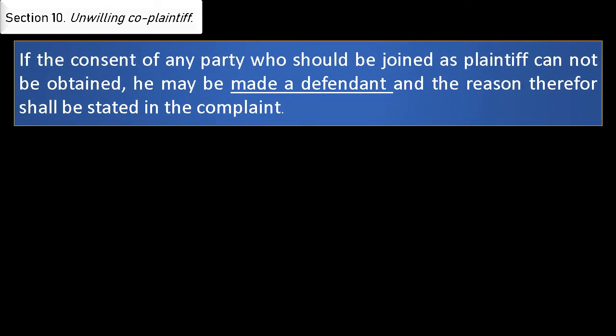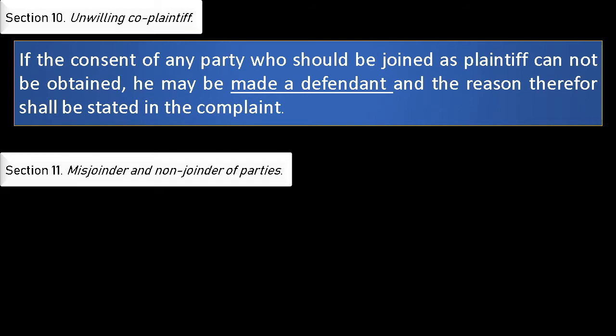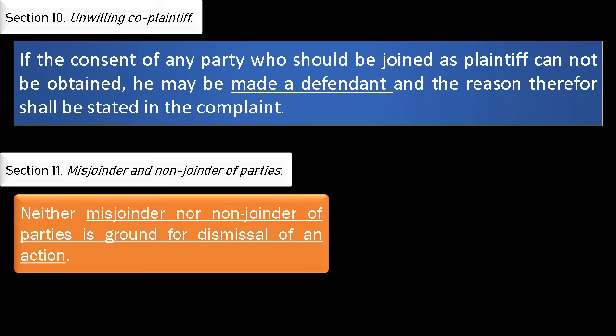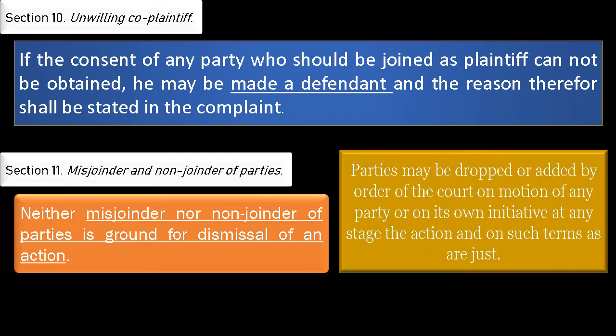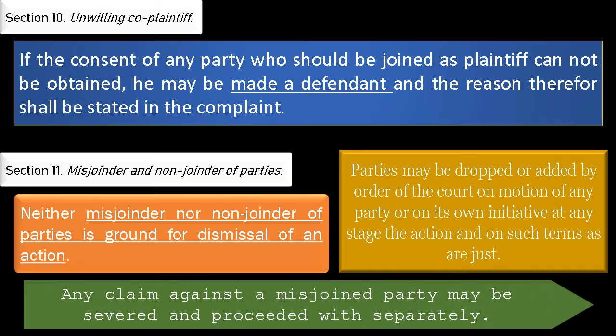Section 10 is about unwilling co-plaintiff: if the consent of any party who should be joined as plaintiff cannot be obtained, he may be made a defendant, and the reason therefore shall be stated in the complaint. Section 11 covers misjoinder and non-joinder of parties. Parties may be dropped or added by order of the court on motion of any party or on its own initiative at any stage in the action. Any claim against a misjoined party may be severed and proceeded with separately.